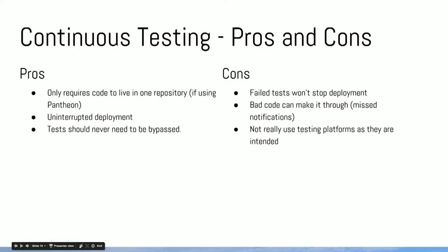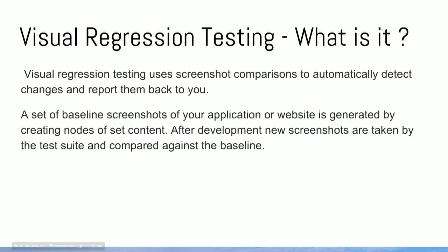The last one we're going to look at is visual regression testing. I've only just started playing with this. The concept is using screenshot comparisons to automatically detect changes and then report them back to you. The usual process: a set of baseline screenshots of your application or website is generated by creating nodes of set content, and then at any point after that you can compare against that baseline to see if any changes have come through. It's only really useful after base development or after a website has been developed, but it can be very powerful.